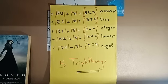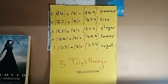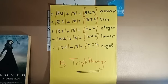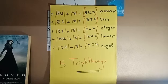The first one is ow plus schwa, which gives 'aua', as in 'power'. Then i plus schwa gives 'aia', as in 'fire'. Then a plus schwa gives 'eia', as in 'player'. Then o plus schwa gives 'oua', as in 'lower'. And the last triphthong is oi plus schwa, which gives 'oia', as in 'royal'.